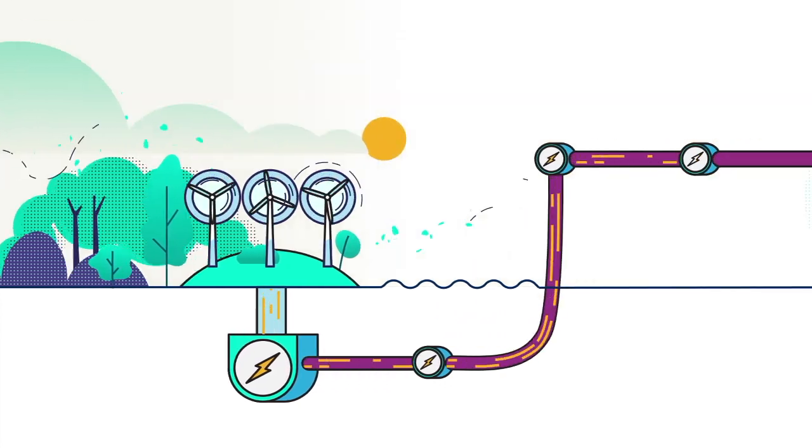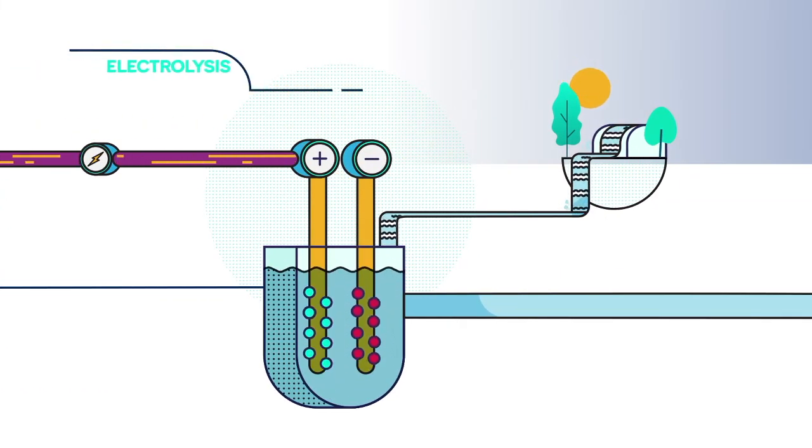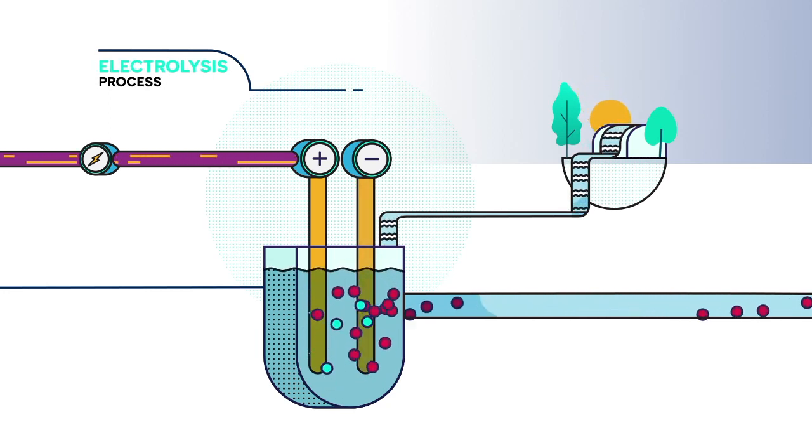We will use wind-generated energy to obtain hydrogen by way of electrolysis, which separates the oxygen from the hydrogen present in water.